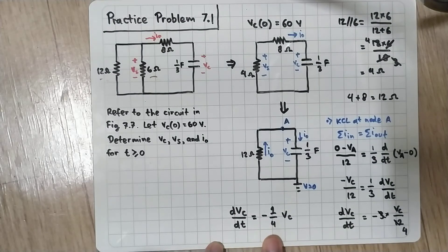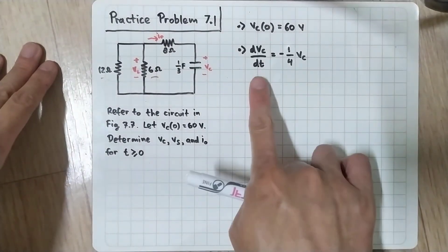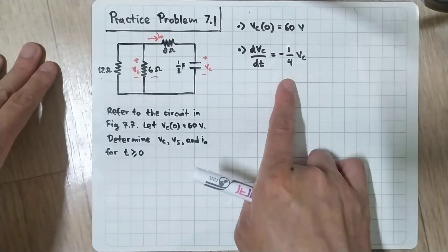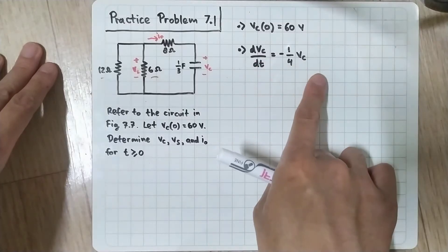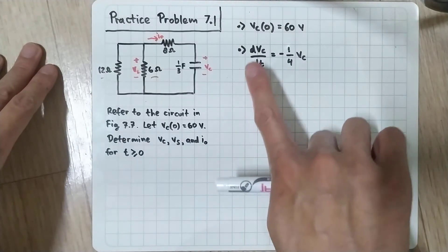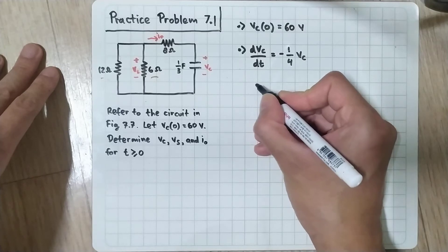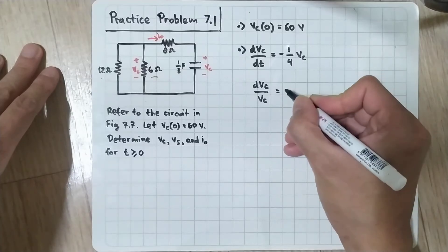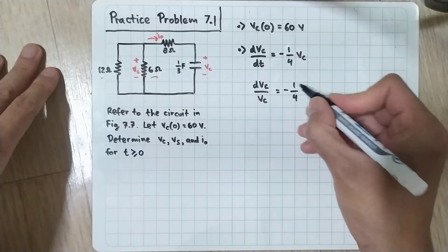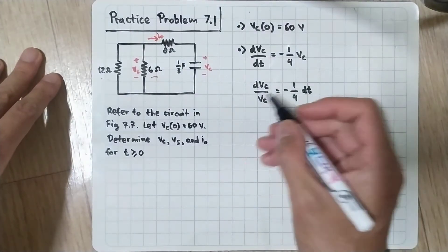We now have a first-order differential equation to solve. Using separation of variables, we isolate all VC terms on the left-hand side and all dt terms on the right-hand side. This gives us dVC/VC = −(1/4) dt.